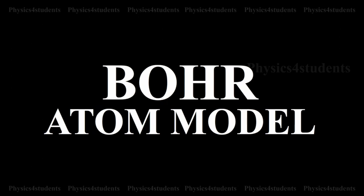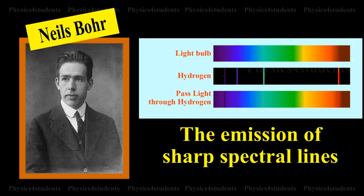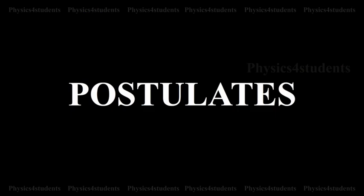Bohr Atom Model. Niels Bohr in 1913 modified Rutherford's atom model in order to explain the stability of the atom and the emission of sharp spectral lines. He proposed the following postulates.